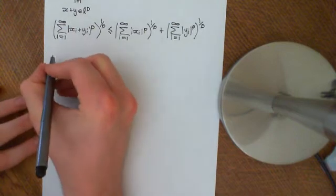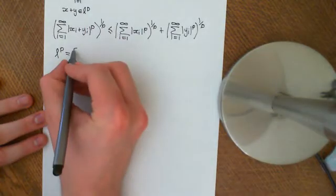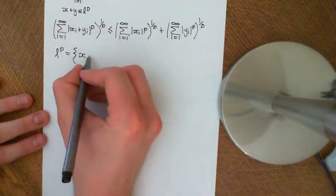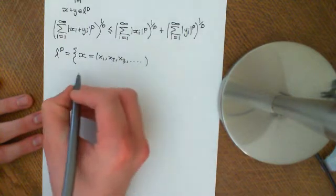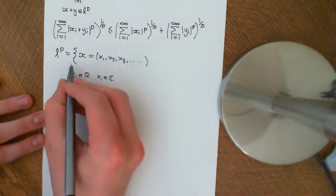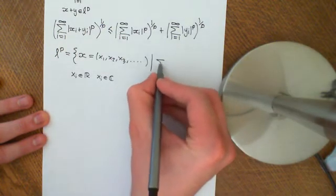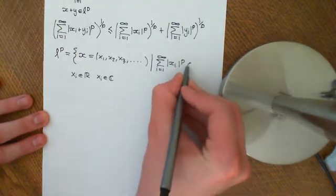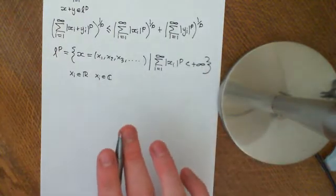The LP space is a set of all sequences. A sequence x consists of elements x1, x2, x3, etc., where the xi's are either real or complex numbers, depending on whether this is a real or complex LP space. The sequences must satisfy the condition that the summation from i equals 1 to infinity of the modulus of xi to the power of p is finite.